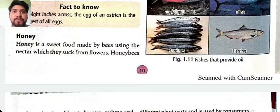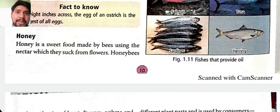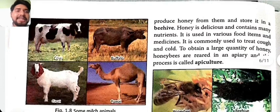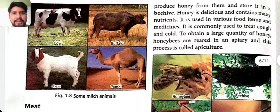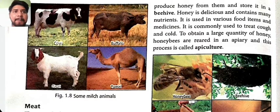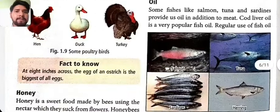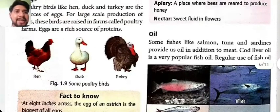Honey is a sweet food made by bees using nectar which they suck from flowers. Honey bees produce honey and store it in the beehive. To obtain a large quantity of honey, honey bees are reared in an apiary, and this process is known as apiculture.